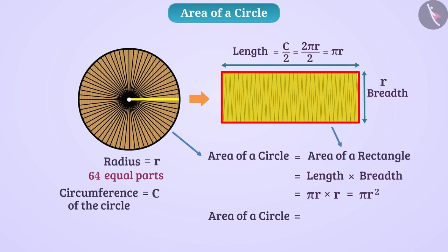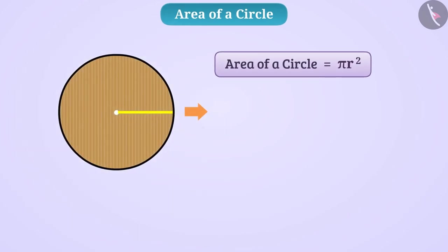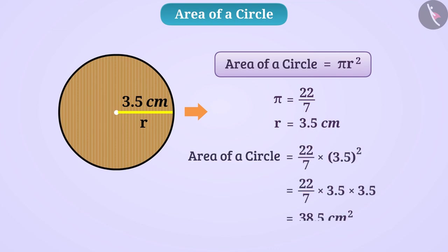We can say that the area of the circle equals the area of the rectangle formed. That means: area of circle = length × breadth = πR × R = πR². So, area of circle = πR². From this formula we can find the area of any circle. For example, for a circle with radius 3.5 cm and pi = 22/7, the area is 38.5 square cm.